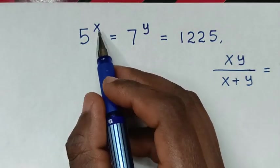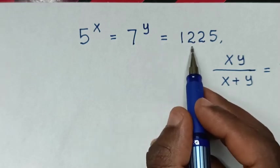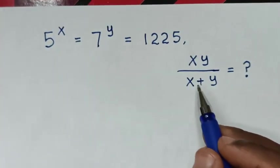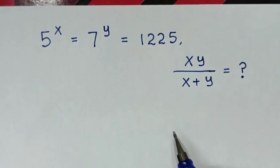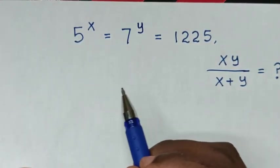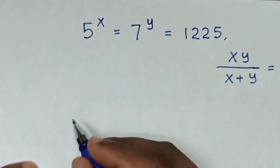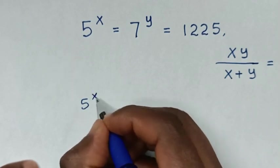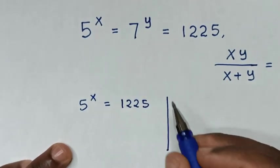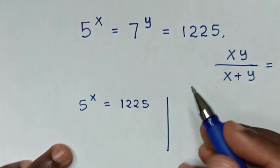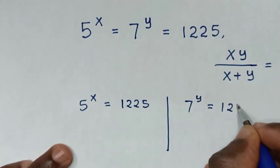Hello. How to solve: 5 power x is equal to 7 power y is equal to 1225, to find the value of xy over x plus y. From this equation, we have two solutions. The first solution: 5 power x is equal to 1225. And the second solution is 7 power y is equal to 1225.